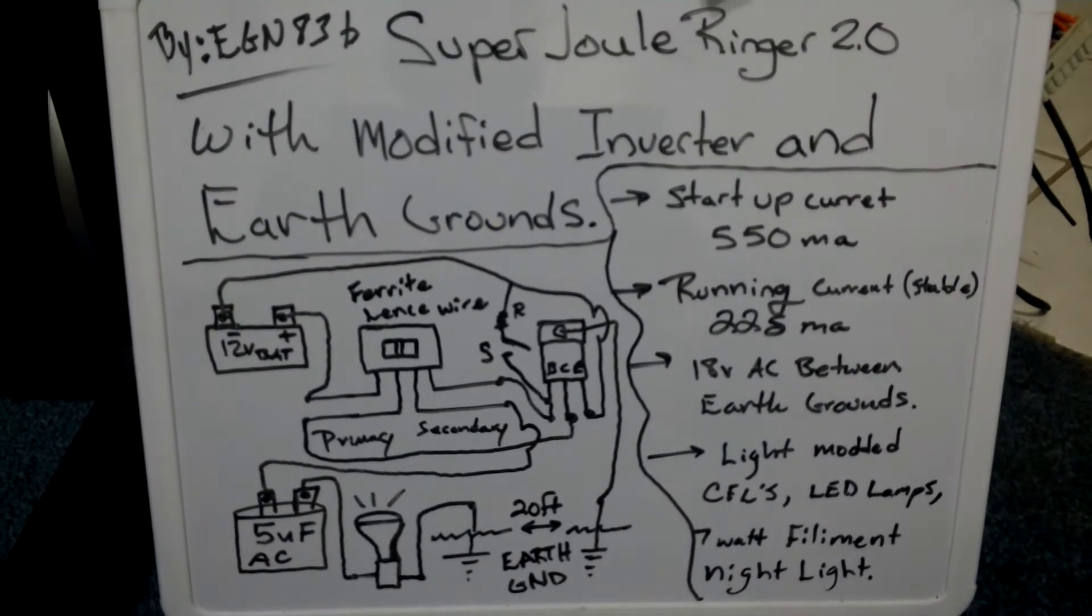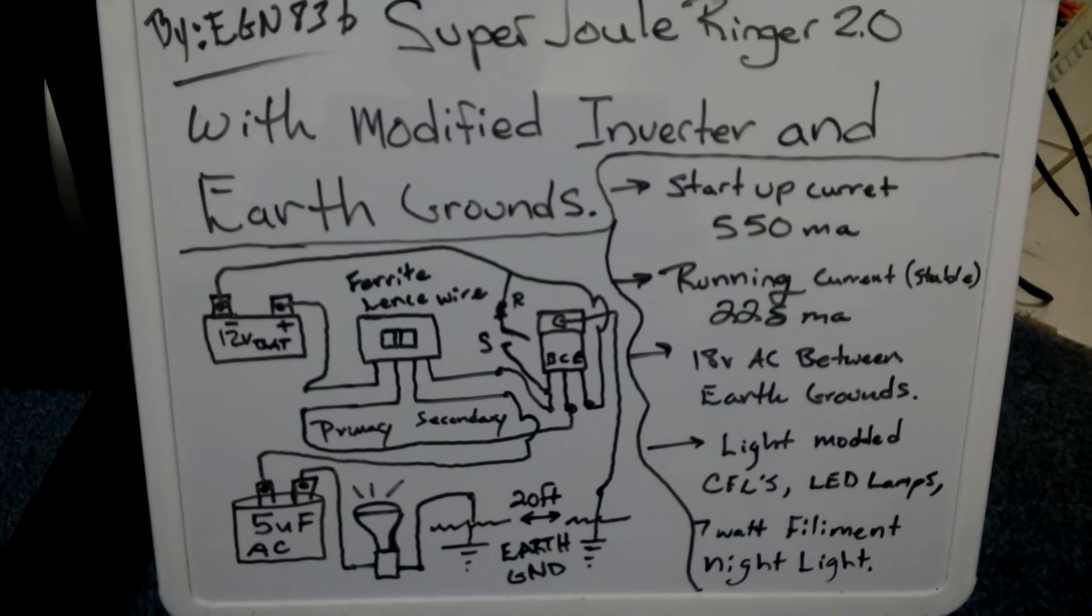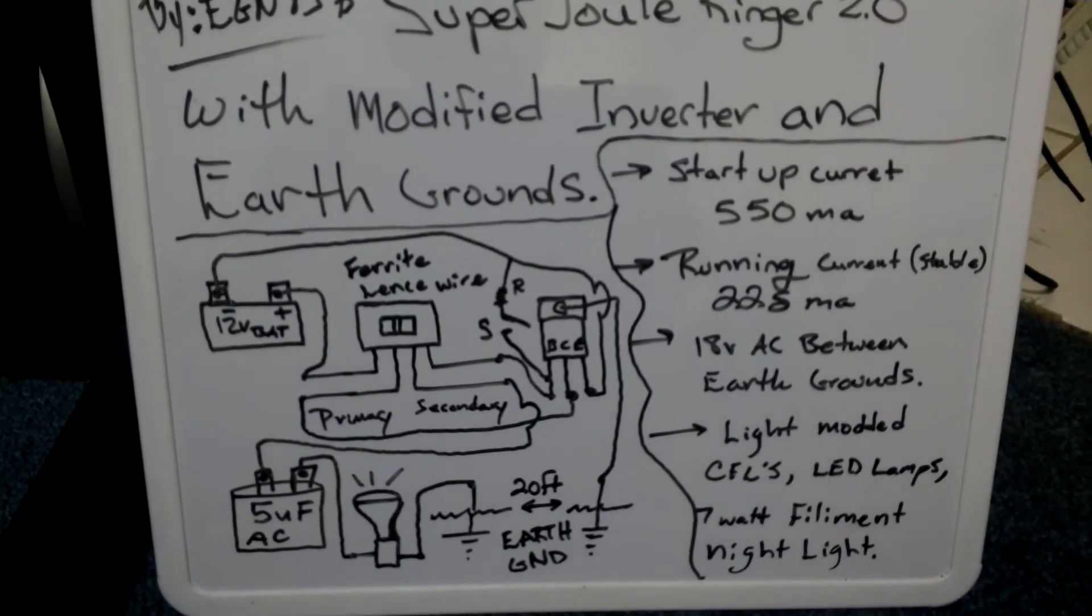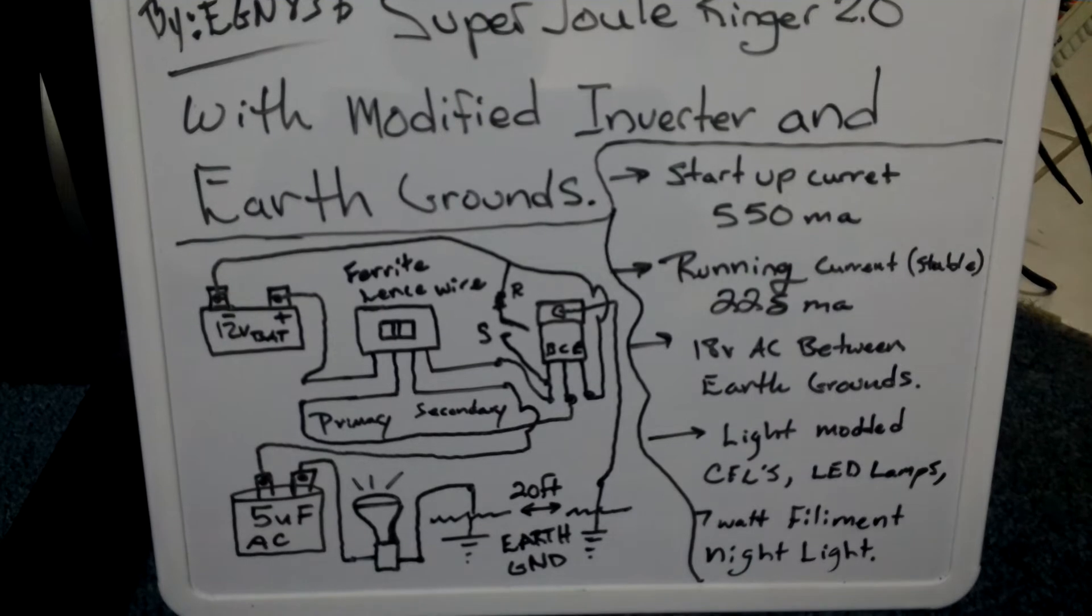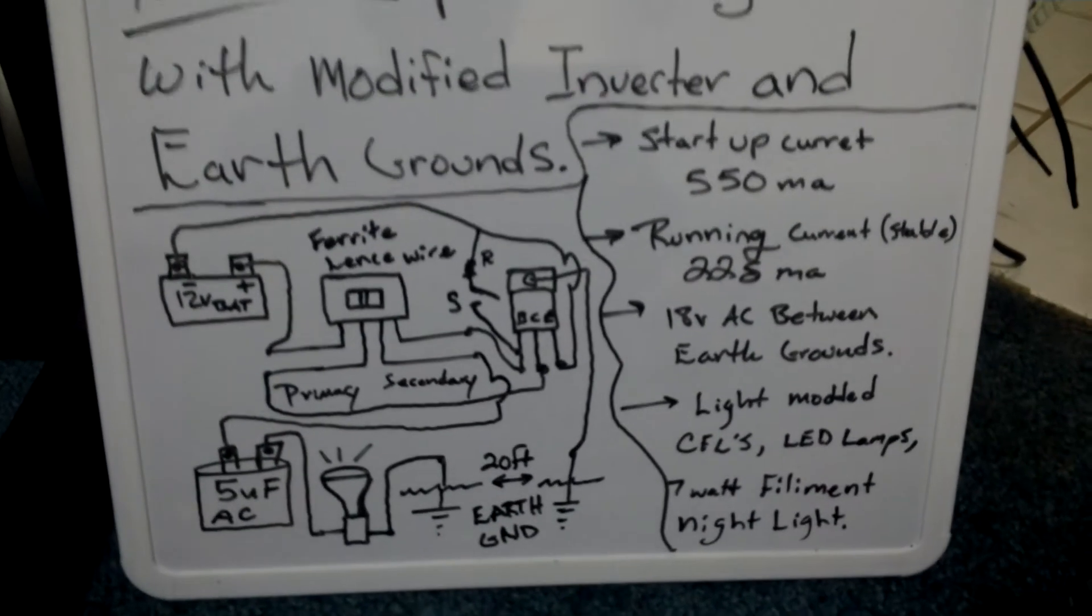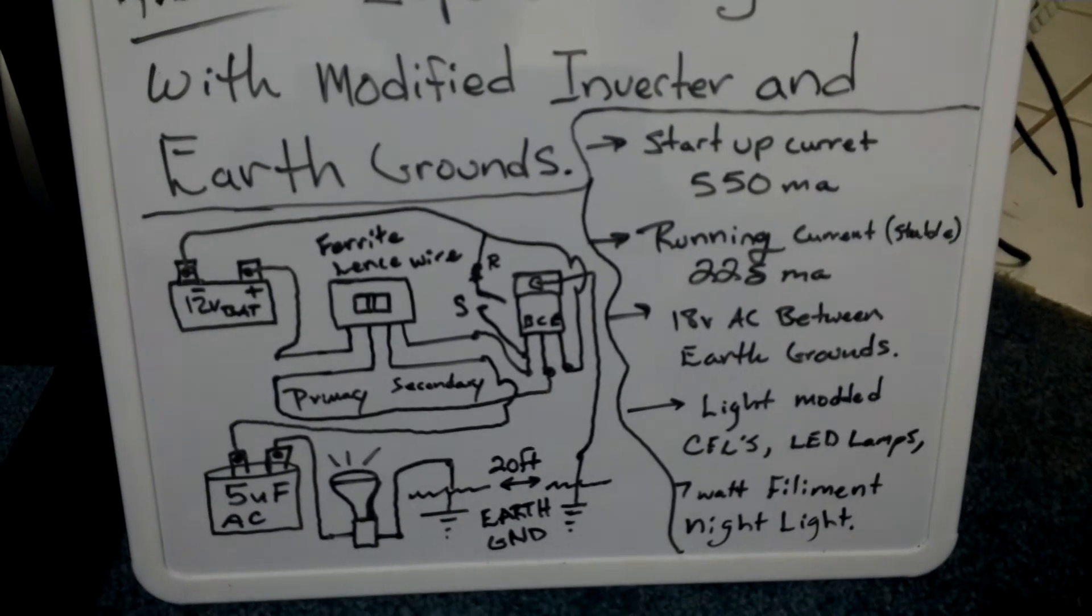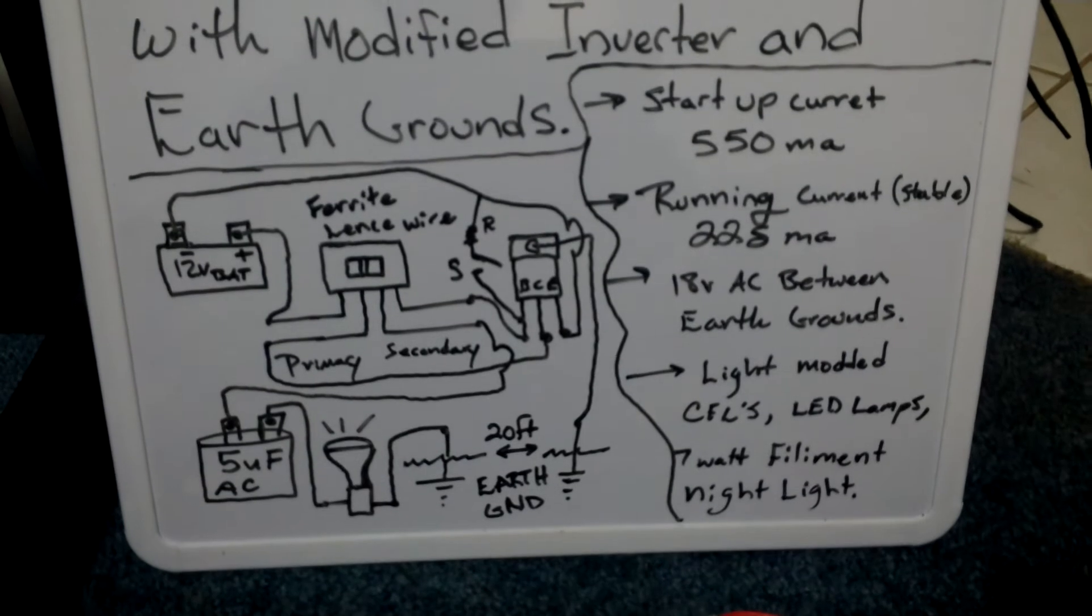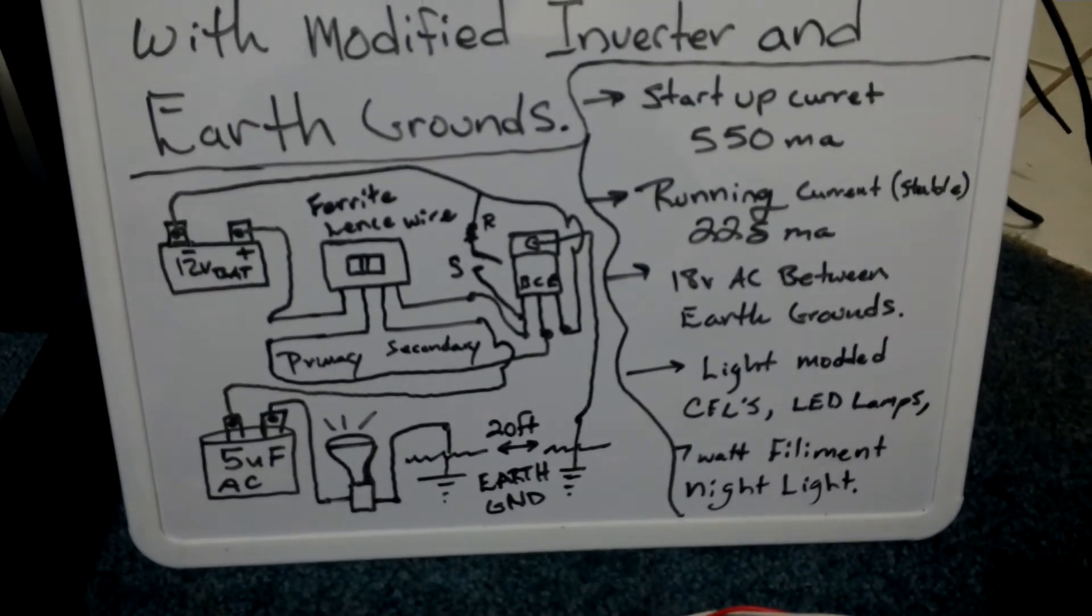And then once the capacitor holds a little bit of a charge, it starts bumping down to about 225 milliamps. There's 18 volts of AC signal coming between the two earth grounds, and I've so far lit up CFL, LED lamps, and a 7 watt filament lamp.